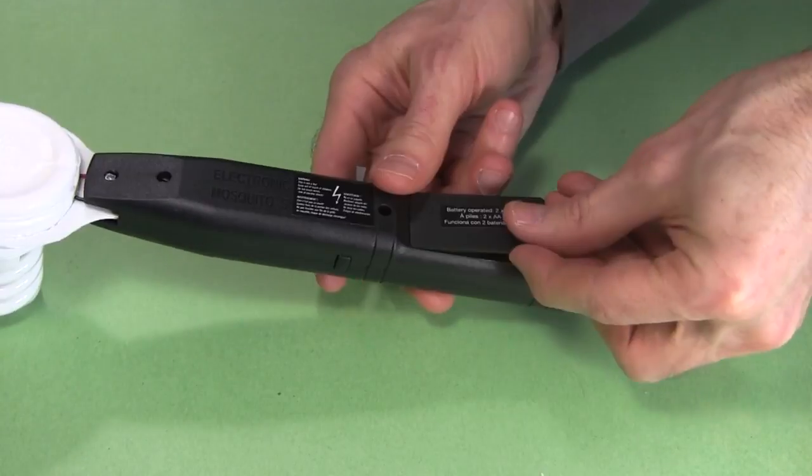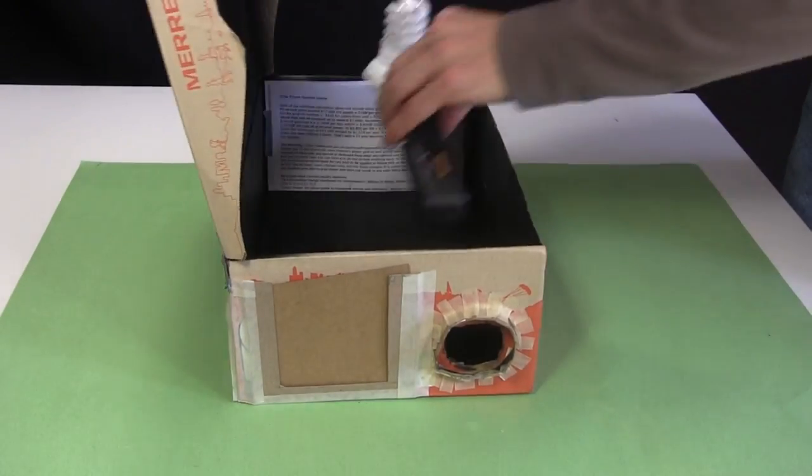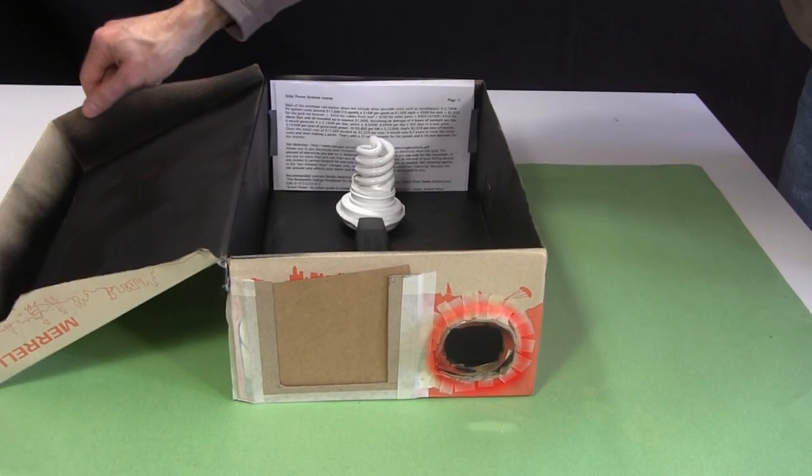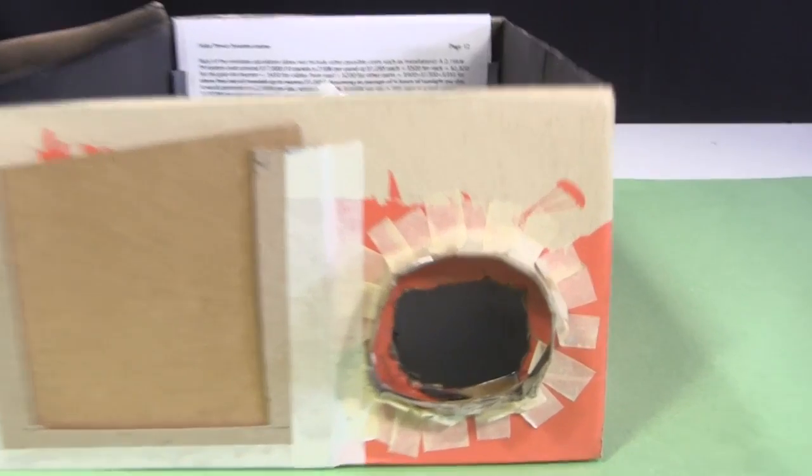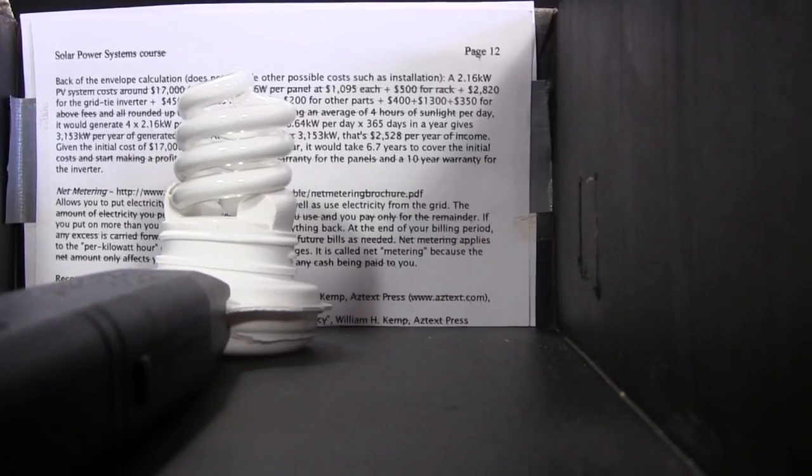And lastly, one question I've gotten a lot is how long it runs for. To measure that, I put in some fresh batteries and put it in this box. The box has a hole at one end. Inside at the other end is some paper with writing on it. This hole lets me see in with the camera to film the light level. The settings on the camera are all set to manual.